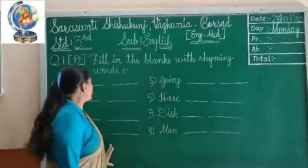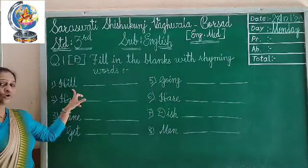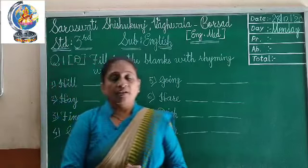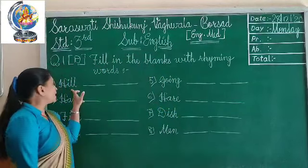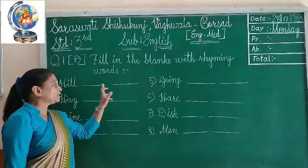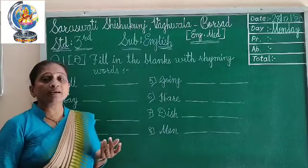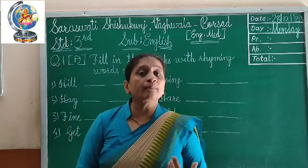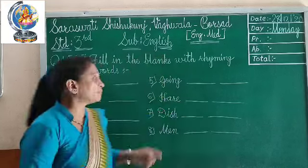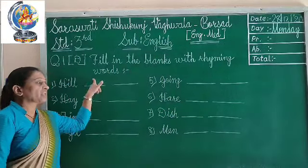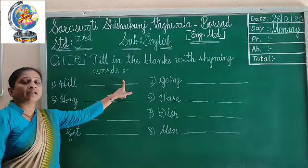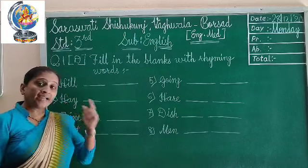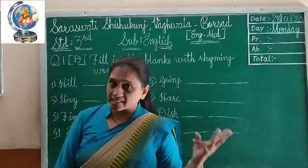Let's see the first one: 'hill.' Which two rhyming words can you write? This is H-I-L-L. So here you can write B-I-L-L — 'bill,' and F-I-L-L — 'fill.' See, I-L-L — these three letters are the same.